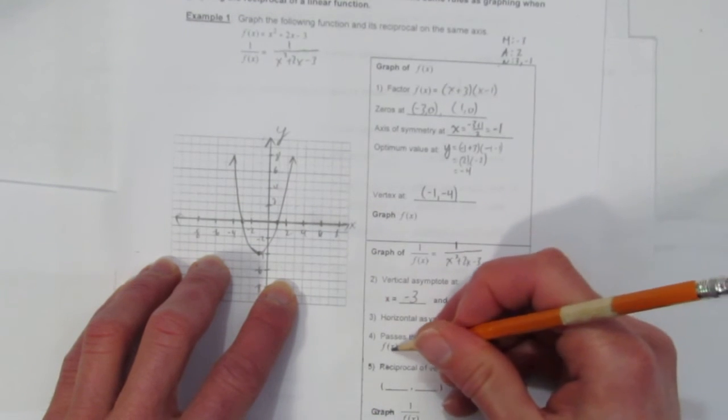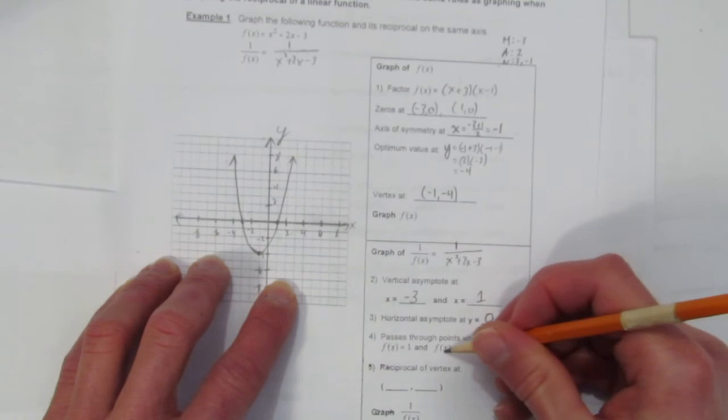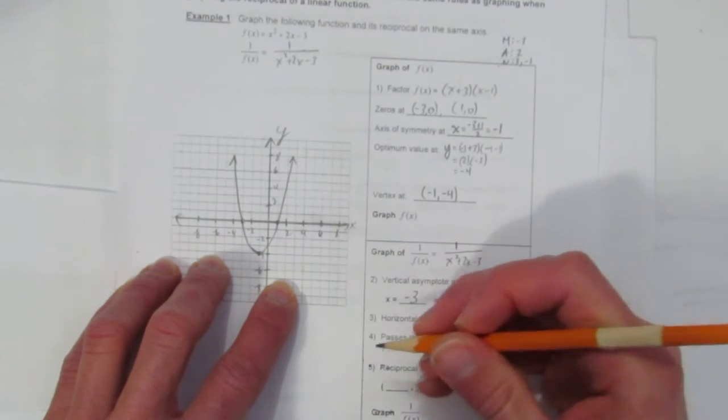All reciprocal functions, 1 over anything, have a horizontal asymptote at y = 0.